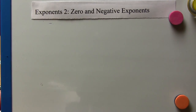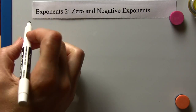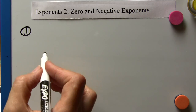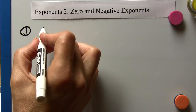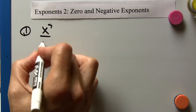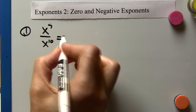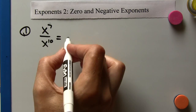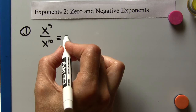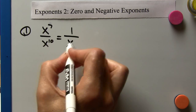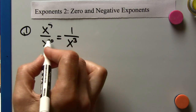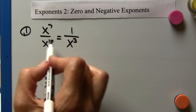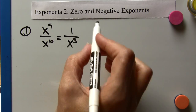Talking about negative exponents now. We take x to the seventh over x to the tenth. When we're dividing, we subtract the exponents. So this is one over x cubed, because ten minus seven is three. We can say subtract and the larger one wins, so it's x cubed in the denominator.